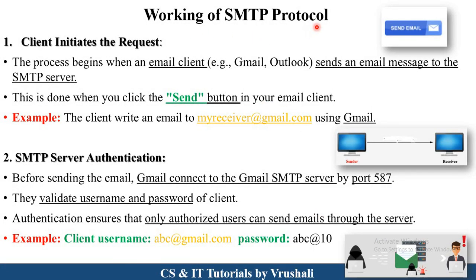The next point is the working of SMTP protocol. The first step is the client initiates the request. Suppose this is a sender and this is a receiver. The sender wants to send a particular mail to the receiver. The receiver's mail ID is myreceiver@gmail.com and the sender's mail ID is abc@gmail.com. The sender clicks the send button in Gmail, and at that time Gmail connects to the Gmail SMTP server, which uses port number 587. The second step is SMTP server authentication before sending the email. The Gmail SMTP server validates the username and password of the client, because only authorized users can send email through the server. It checks the client username — abc@gmail.com — as a valid user.